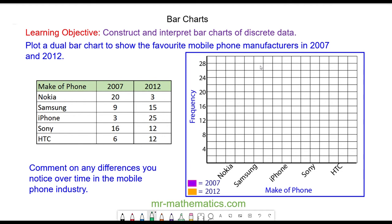Nokia has a frequency of 20 in 2007, so I'll draw a bar that's 20 units high. In 2012, the frequency is 3, so I'll draw a bar next to the 2007 bar that's 3 units high.